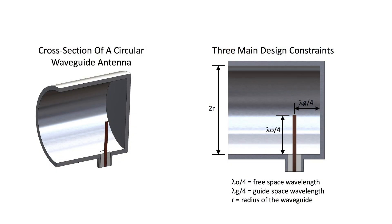As the image shows, there are three main physical features in the design of a circular waveguide antenna. First is the radius of the waveguide itself, which must be chosen carefully for proper function. Second is the probe inside the antenna — its length and diameter are important. Third is the position of the probe in the circular waveguide. These three parameters basically control the function of the entire antenna, and their physical parameters are critically important, though there are other parameters as well.